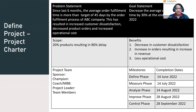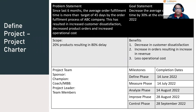The problem statement defines the problem in the process. For example: since the last six months, the average order fulfillment time is more than the target of 45 days by the order fulfillment process of ABC company. This has resulted in increased customer dissatisfaction, decreased product orders, and increased operational costs.